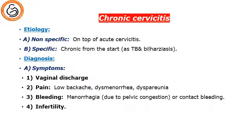The diagnosis of chronic cervicitis includes vaginal discharge, the presence of pain, low backache, dyspareunia, dysmenorrhea, the presence of bleeding — which is menorrhagia due to pelvic congestion or contact bleeding, which is very specific — and infertility.